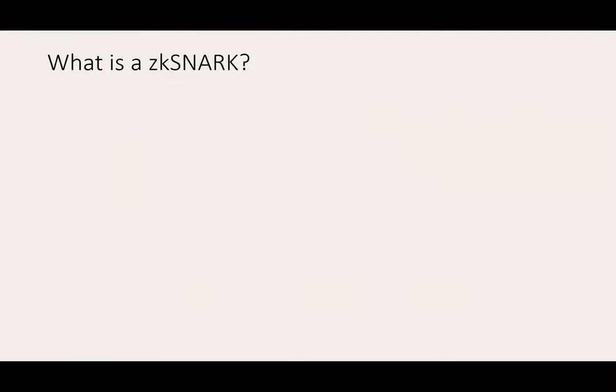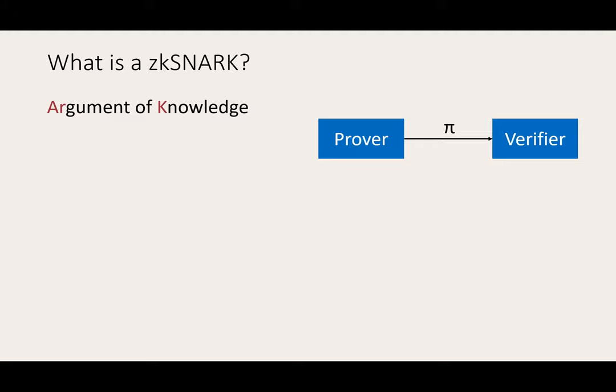A ZK-SNARK is an argument of knowledge, meaning that it's a protocol between a prover and a verifier. In this protocol, the prover wants to convince the verifier that it knows a witness to an NP statement by producing a proof. Specifically, given a circuit C with public input X, the prover wants to prove the knowledge of W such that the circuit C is satisfiable.